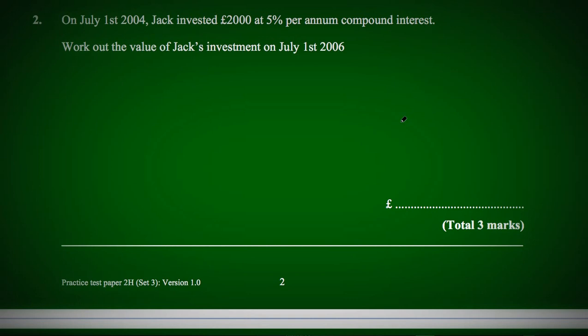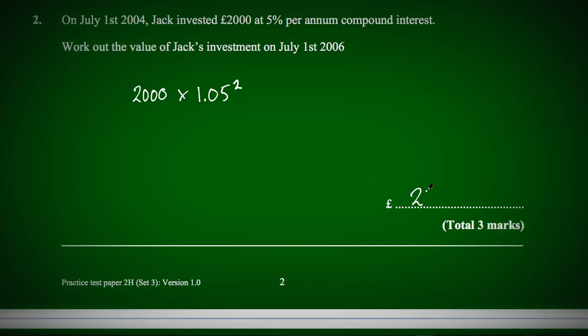Question 2. On July 1st 2004 Jack invested two thousand pounds at five percent per annum compound interest. Work out the value of Jack's investment on July 1st 2006. That's two years, so we use the multiplier squared: 2000 × 1.05² = 2205. You could also just write × 1.05 × 1.05 for each of the years involved.